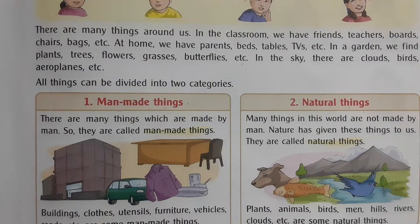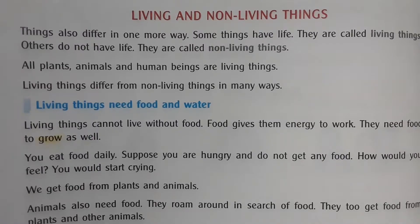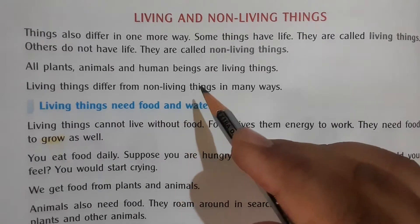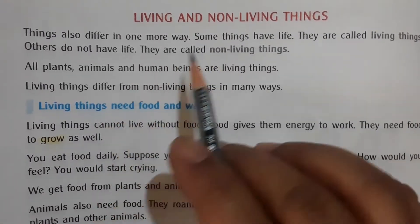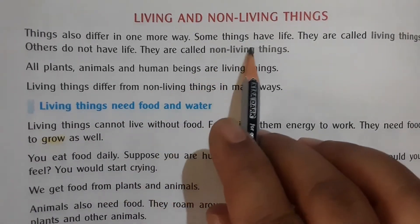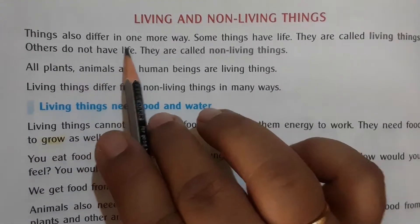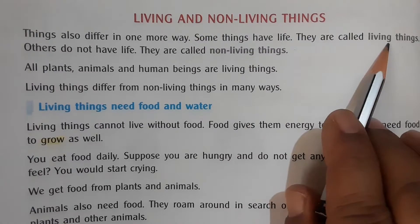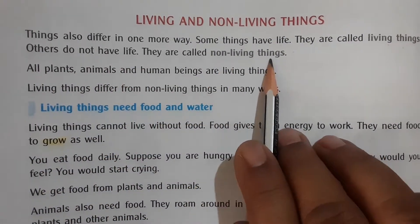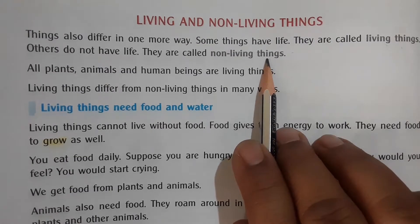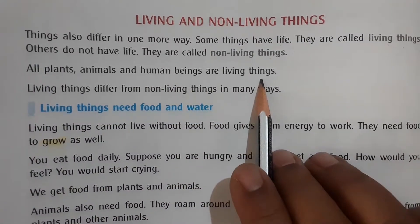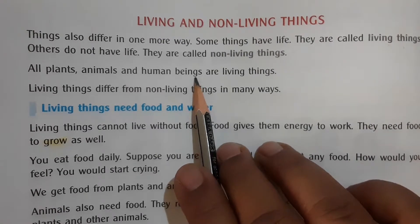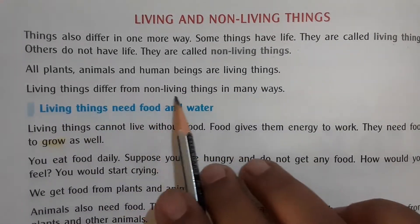Now, living and non-living things — what is the difference? What characteristics can we use to differentiate them? Things differ in one or more ways. Some things have life — they are called living things. Others do not have life — they are called non-living things. All plants, animals and human beings are living things because they can move, speak, and eat.